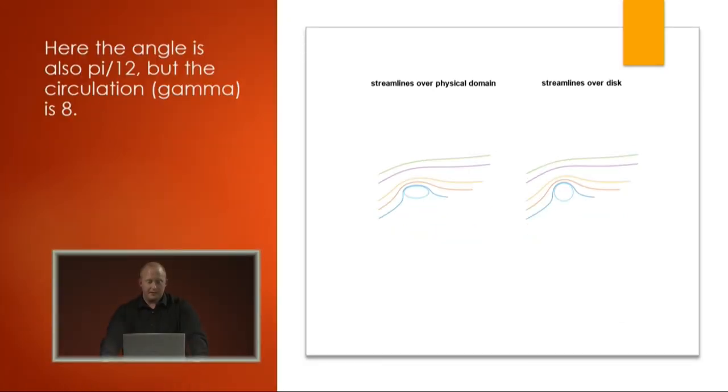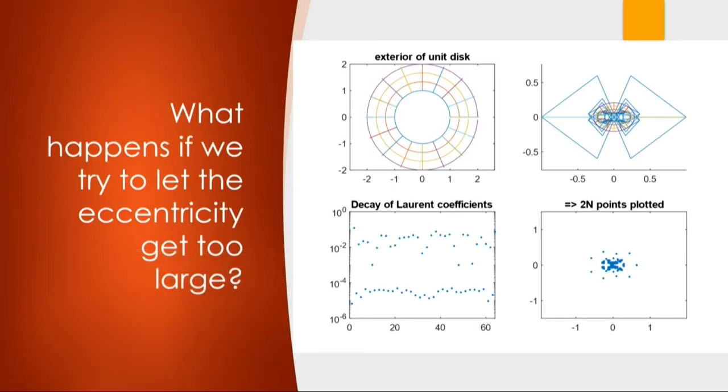Here, the same angle, but we change the circulation. And here's what happens if the eccentricity gets a little too large, meaning this is what happens when our shape does get a little flat.